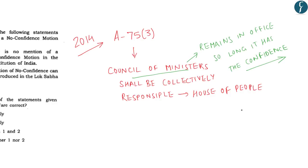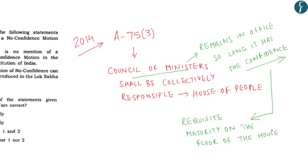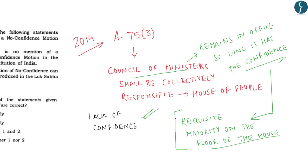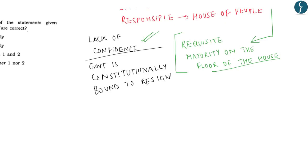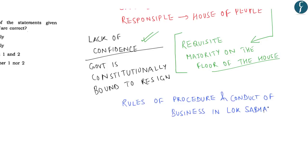The word confidence here means having the requisite majority on the floor of the house. Thus, this no confidence motion effectively checks whether the government in power has the requisite majority on the floor of the house of Lok Sabha. The moment a government expresses a lack of confidence, it is constitutionally bound to resign. The rules of procedure and conduct of business in Lok Sabha provide for moving a motion to this effect, which is called a no confidence motion.